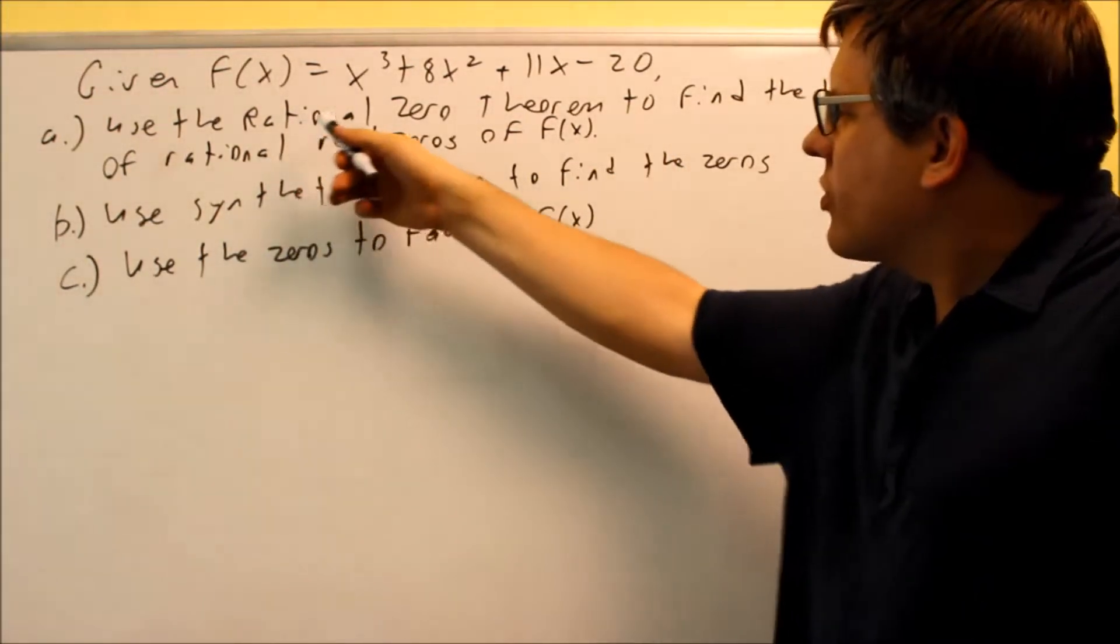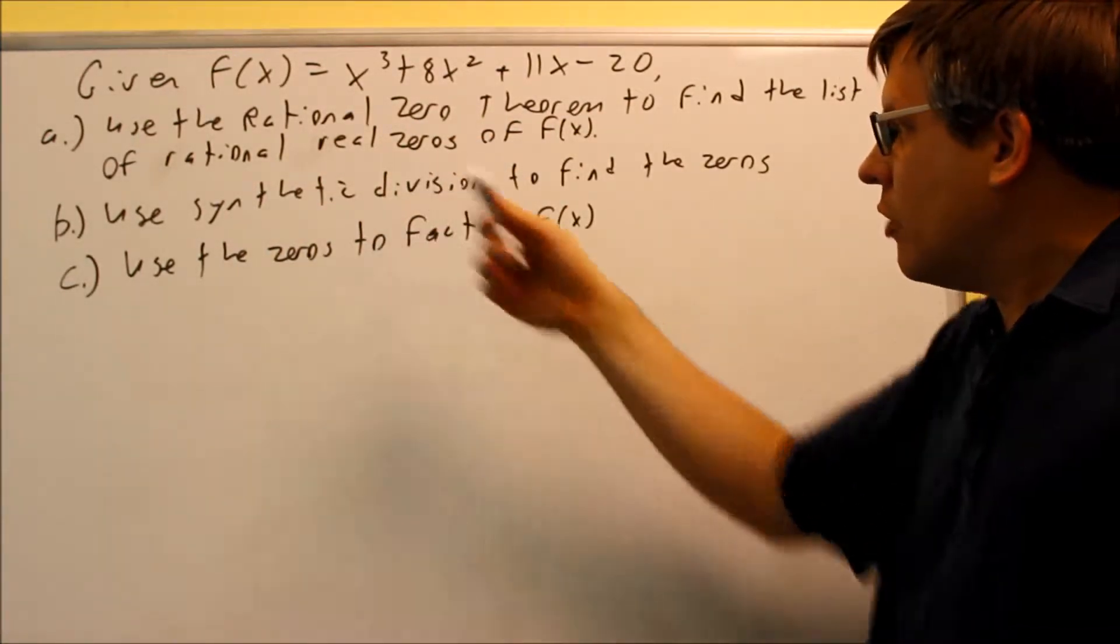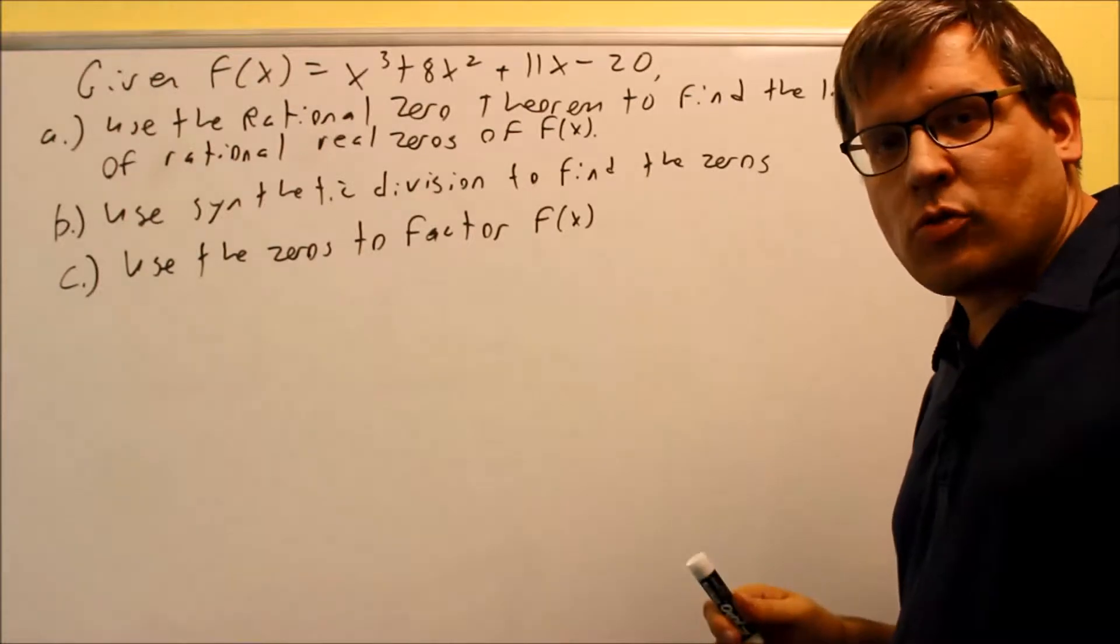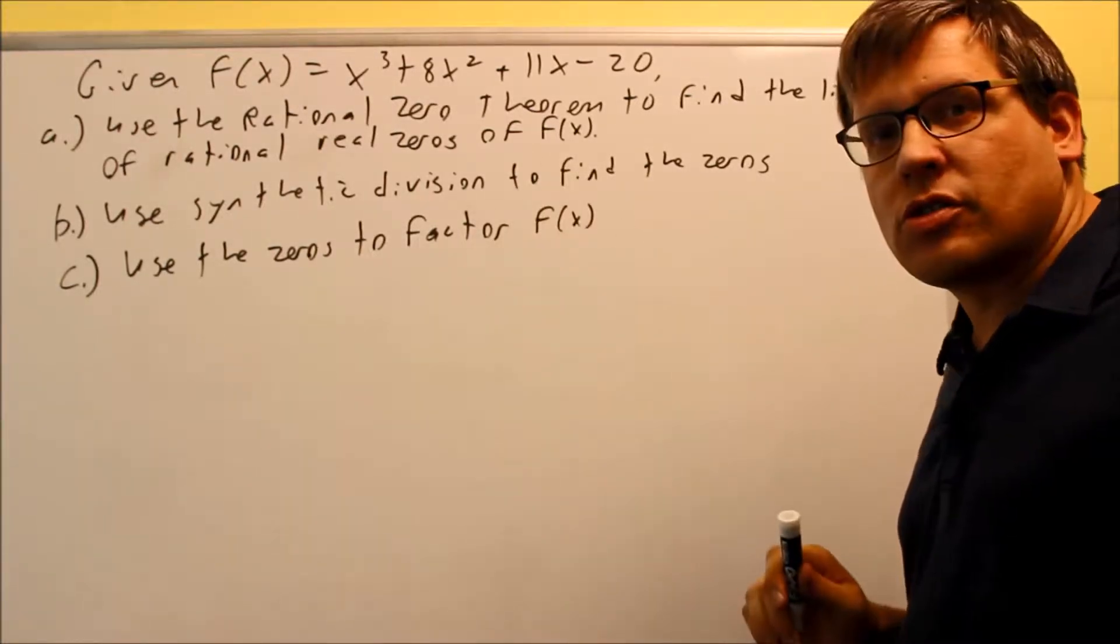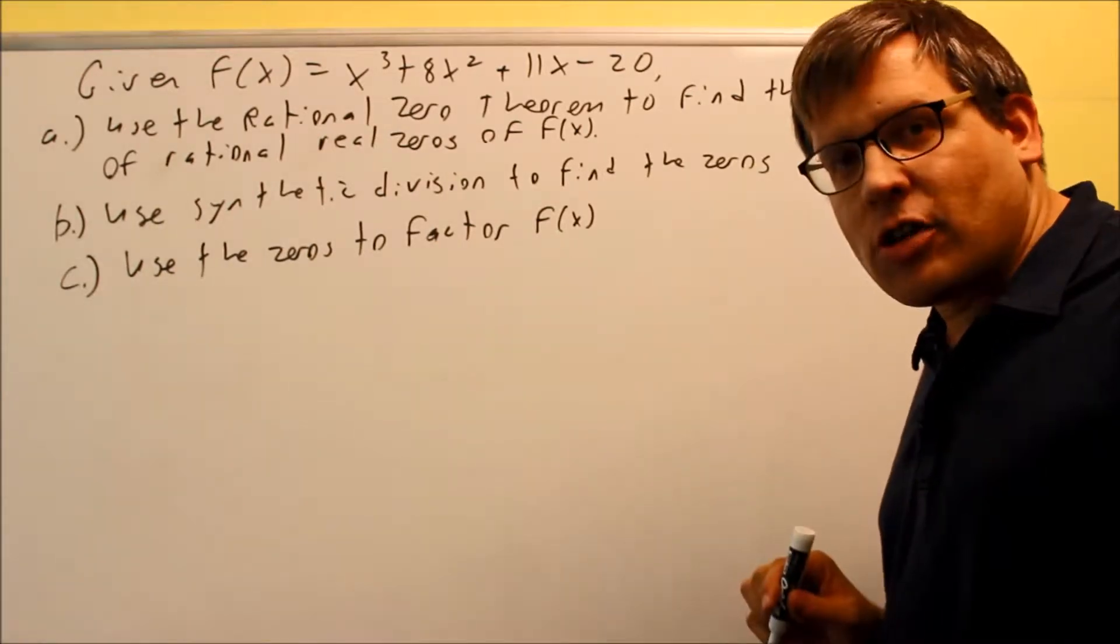First part is we want to use the rational zero theorem to find a list of rational real zeros. The second one, we're going to actually find what the zeros actually are, and then for part c we're going to use the zeros to factor f of x.